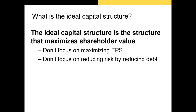The ideal capital structure is the structure that maximizes shareholder value. For most firms, there's a happy medium where the pros and cons of debt offset each other. While high financial leverage can increase earnings per share, it also increases the probability of bankruptcy, which can drive share value close to zero. Shareholders should be wary when a firm's debt-to-total-assets ratio is very high or interest expense is large relative to EBIT.